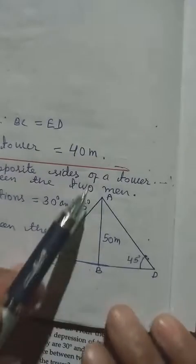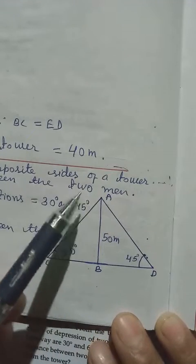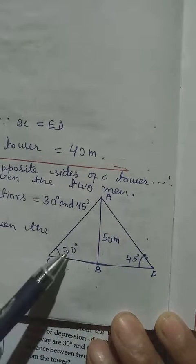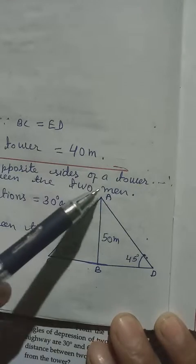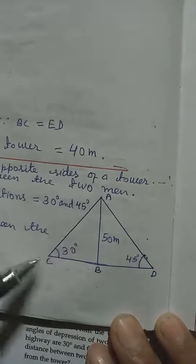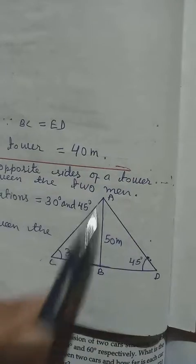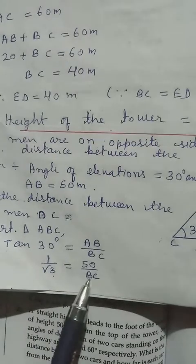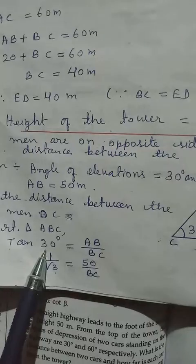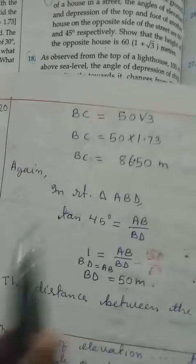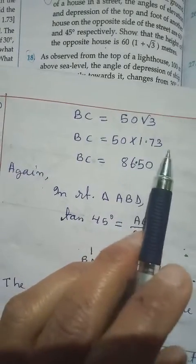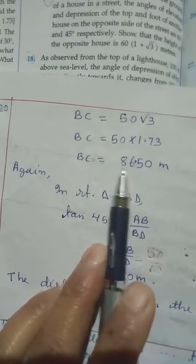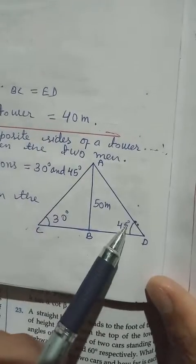After drawing it properly, starting from triangle ABD: tan 30° equals perpendicular by base, that is AB by BC. We know AB is 50. From the table, tan 30° equals 1/√3. Cross multiplying: BC = 50√3. We know √3 = 1.73, so multiplying with 50 we get BC = 86.50.